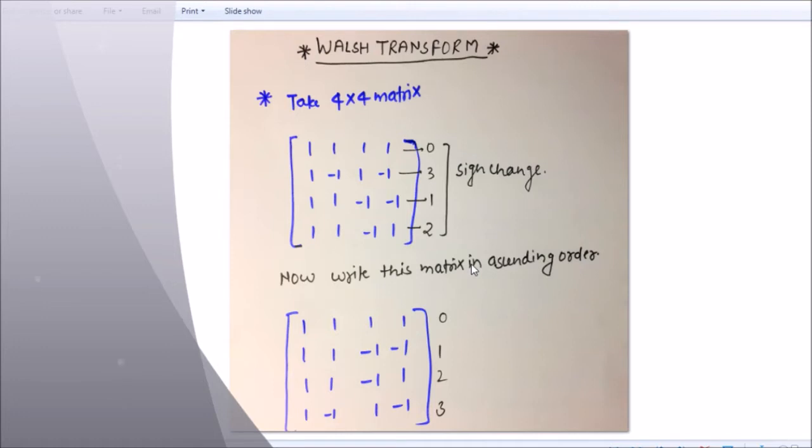So what do you do, friends? Walsh has said that you have a lot of multiplication of ij, e raised to the power j plus k, e raised to the power 2 pi and k by n. He said that this is not necessary to do anything, so I will tell you a form of matrix so you can do it and it will be very easy to do it.